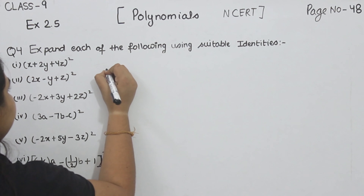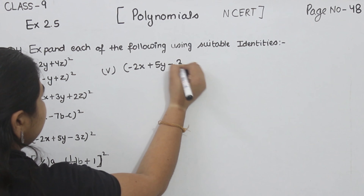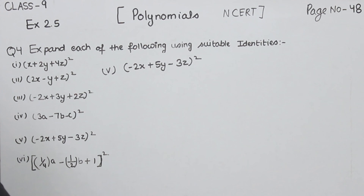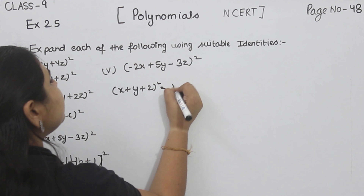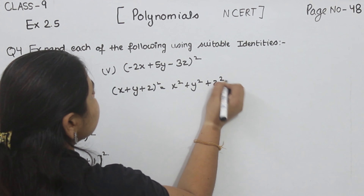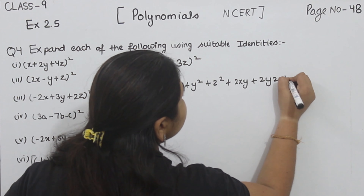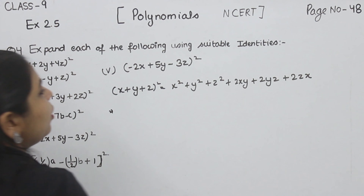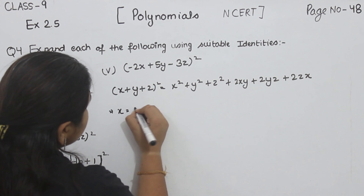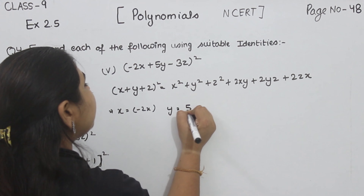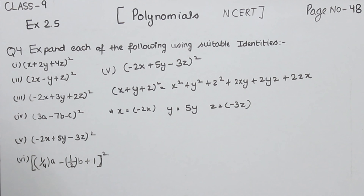Part 5: minus 2X plus 5Y minus 3Z, whole square. X plus Y plus Z whole square is equal to X square plus Y square plus Z square plus 2XY plus 2YZ plus 2ZX. Now we are going to use the identity in this question. Here X is equal to minus 2X, Y is equal to 5Y, and Z is equal to minus 3Z. Now we are going to put the values.